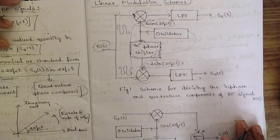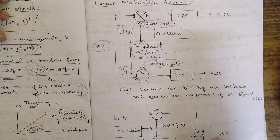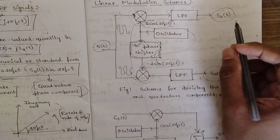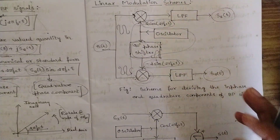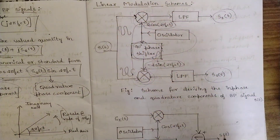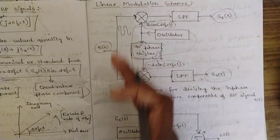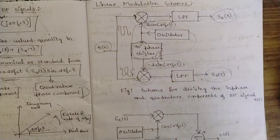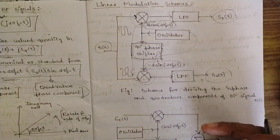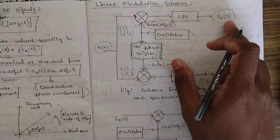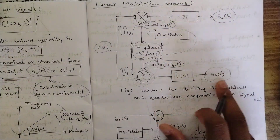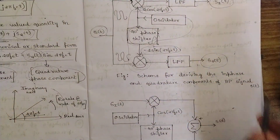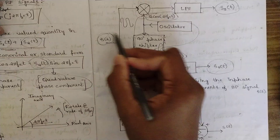The signals then pass to the low pass filters in order to remove all the high frequency components. When s_i(t) and s_q(t) are separately generated — the in-phase component and quadrature phase component — this completes the structure. From a simple pre-envelope, using multiplier circuits and a 90-degree phase shifter with an oscillator, the signals are processed and all high frequency components are eliminated by the low pass filter, finally producing the in-phase and quadrature phase component outputs. This is the scheme for deriving the in-phase and quadrature components of a band pass signal s(t).